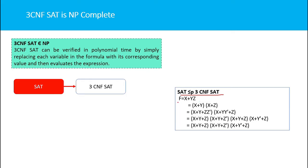Consider this boolean formula belonging to the SAT problem: f = (x + y + z), where x, y, and z are three boolean literals. We can convert this into 3CNF form — that is, reduce it to 3CNF in polynomial time. We apply the OR operation inside the AND operation, getting (x + y) AND (x + n) — distributing and expanding the expression.